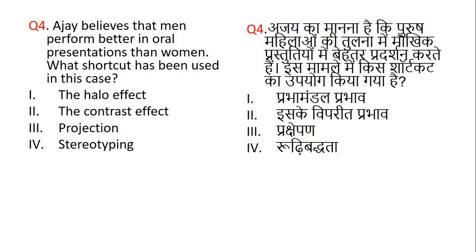Question number 4. Ajay believes that men perform better in oral representation than women. What shortcut has been used in this case? The right answer is 4, that is stereotyping.